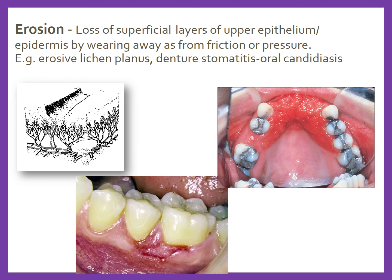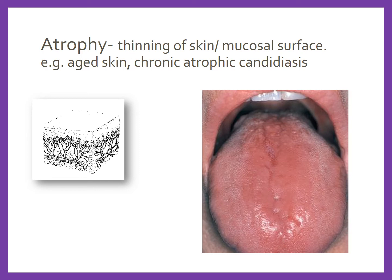Erosion is loss of superficial layers of epithelium or dermis by wearing away, as from friction or pressure. Shown here is erosive lichen planus on the gingiva, and candidiasis caused by denture stomatitis producing erosion of the mucosa on the palatal aspect. Atrophy is thinning of skin or mucosal surface. An example is chronic atrophic candidiasis, where visible loss of papillae and atrophy can be seen on the dorsum of the tongue.